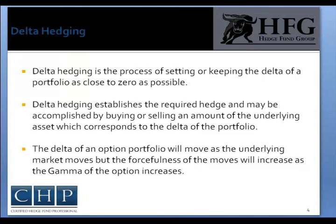The Delta of an option portfolio will move as the asset's underlying market moves, but the forcefulness of the moves will increase as the Gamma of the option moves. Gamma is a derivative of Delta and is the rate of change of the Delta. Given there are numerous Greek components that a portfolio manager needs to watch, Option Delta is usually the most important.